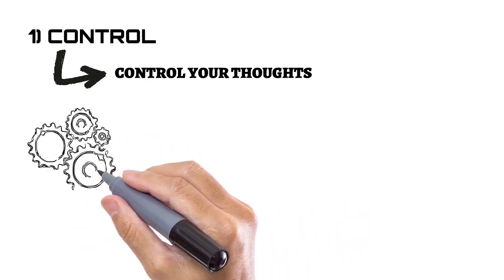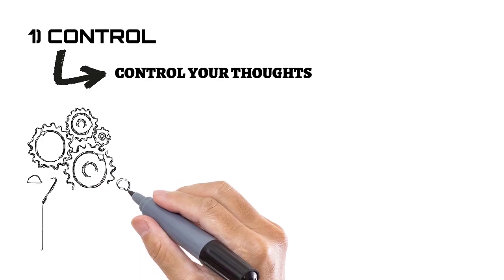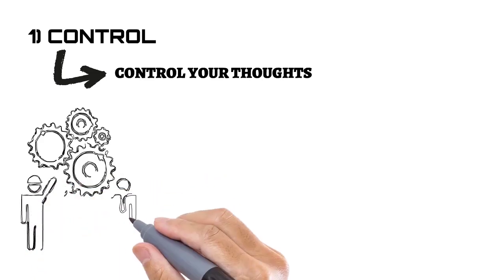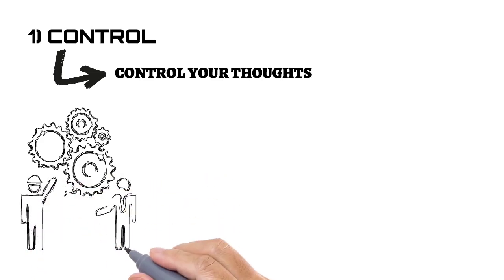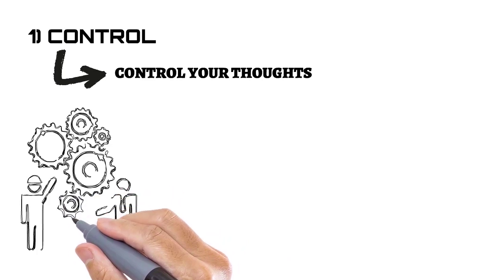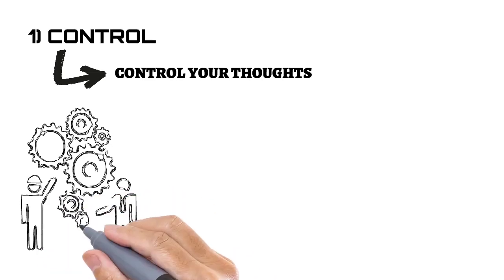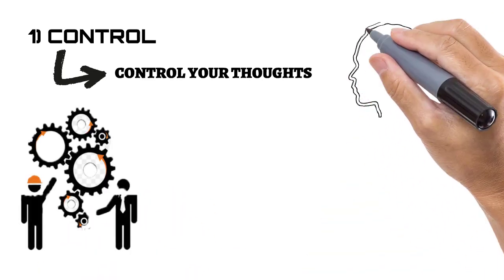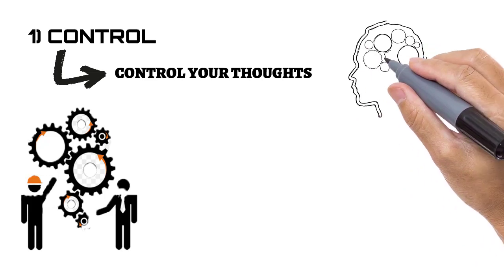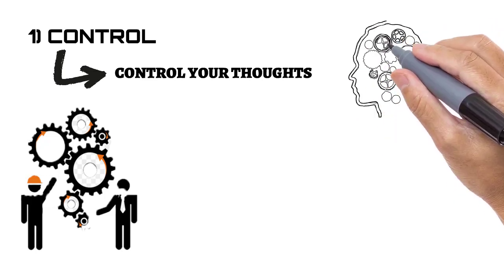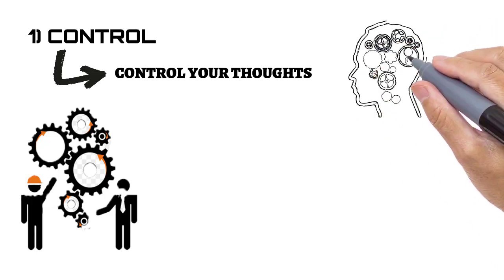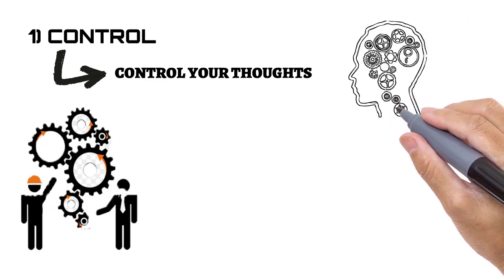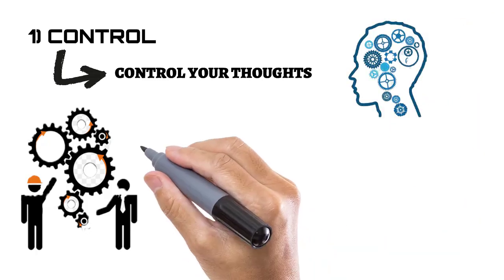In the case of a factory, if you want the desired output in the form of biscuits, you have to put in some input — the ingredients of biscuit, that is flour, butter, sugar, etc. Similarly, in the case of a human being, we have to put in some input into the human brain to get the desired output.